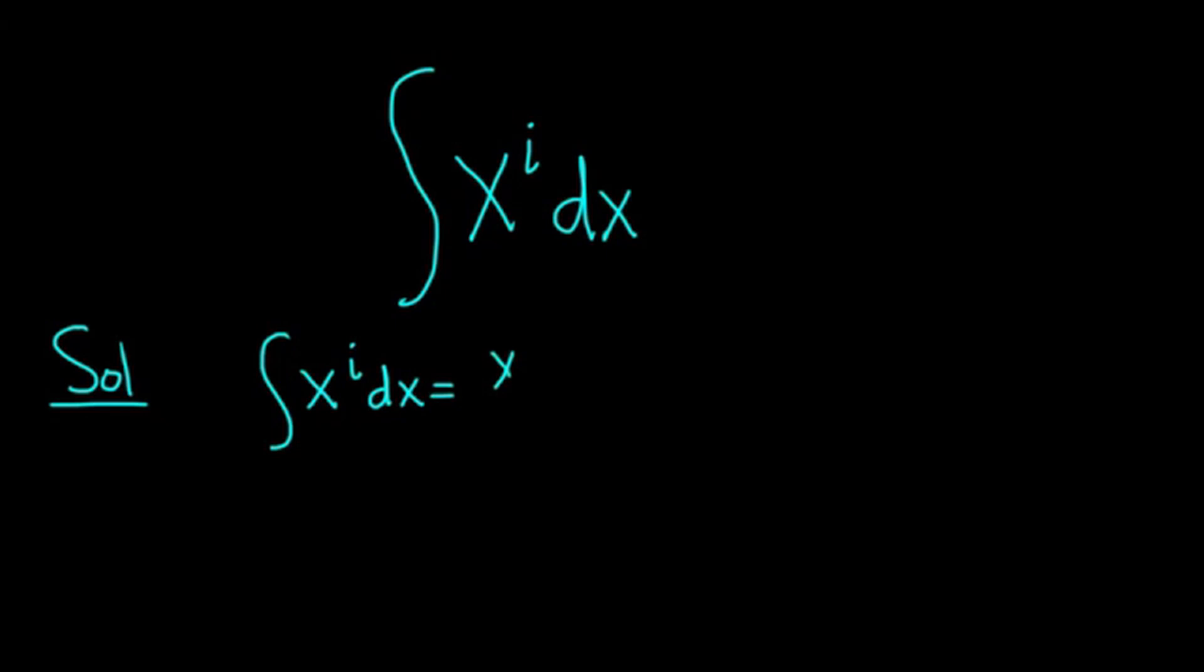so you get x to the i plus 1, then you just divide by i plus 1. Just like in a regular calculus class, you just add 1 and divide by the result, plus c.